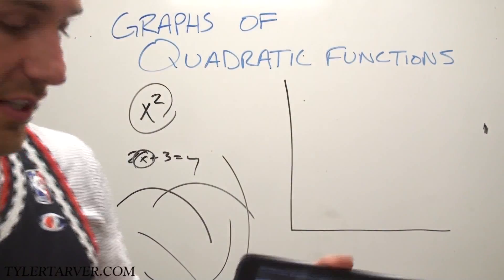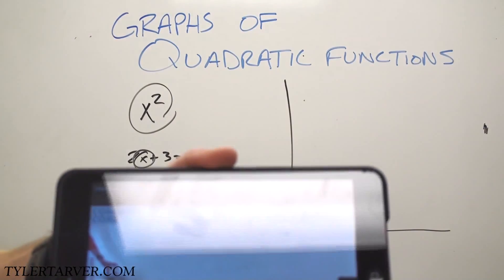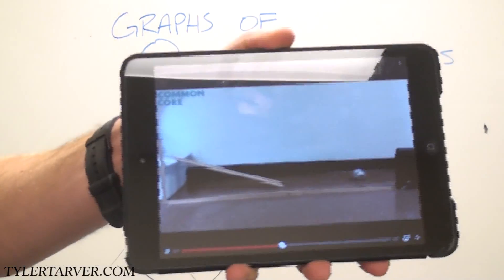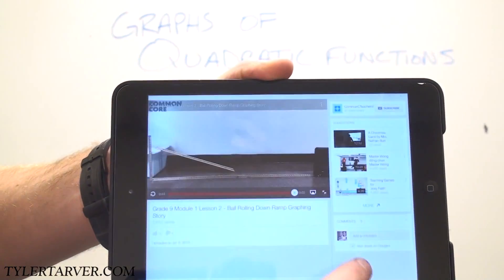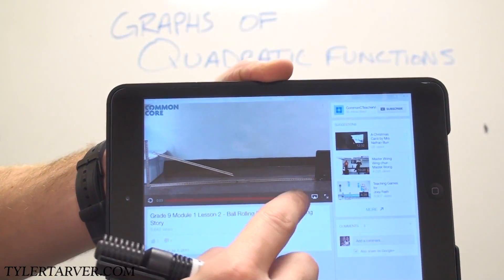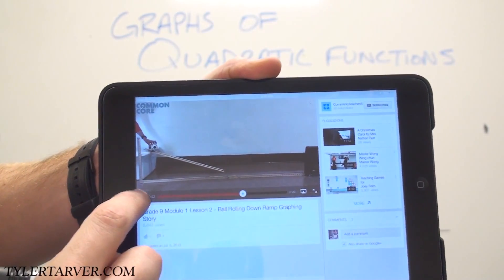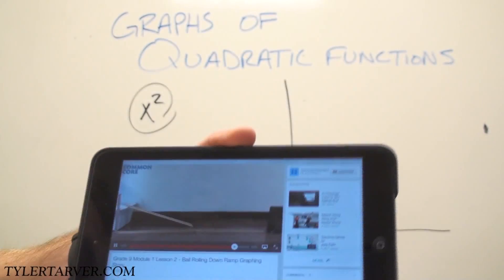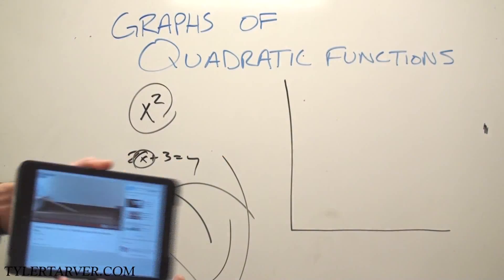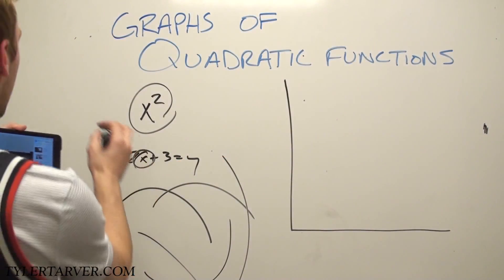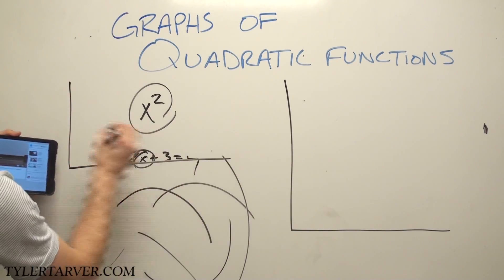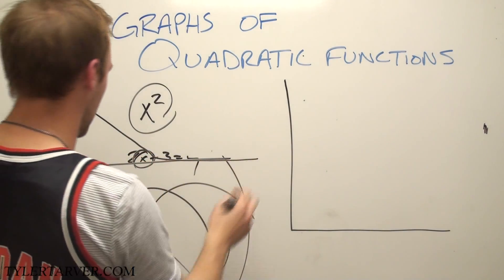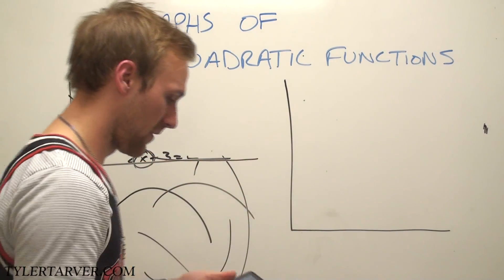So let's watch this video real quick. The dude just had this little ruler up, had another one out here, rolled the ball, and then it rolled across the ground.